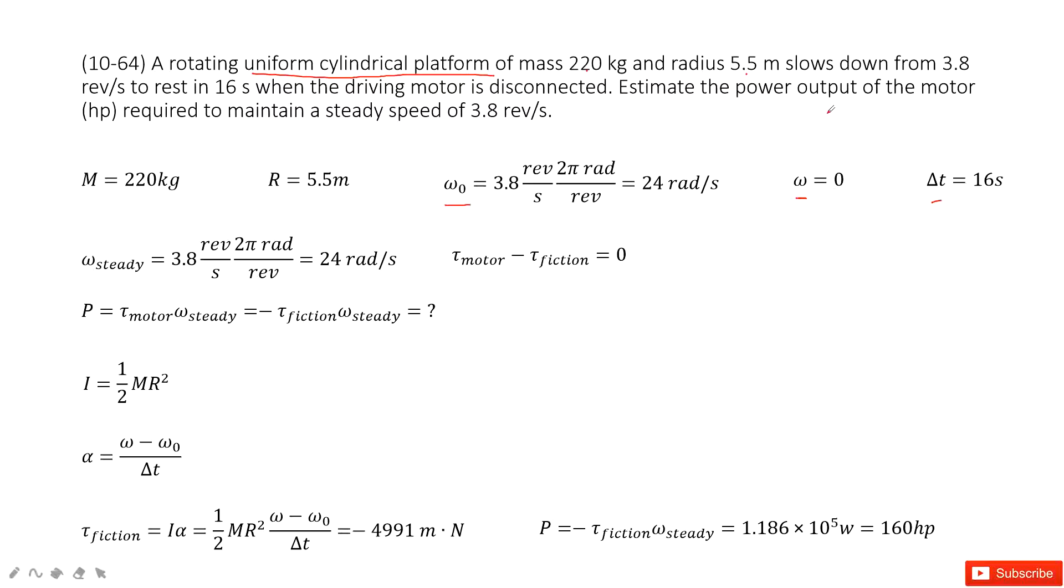And then, we need to find the power output of the motor, just the power required to maintain a steady speed, 3.8 revolution per second. Then, similarly, we still need to convert the unit revolution per second to unit radians per second.